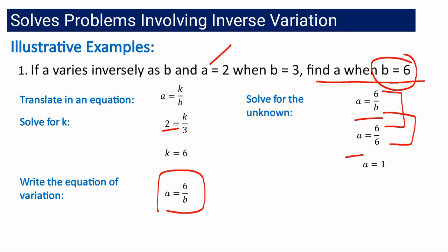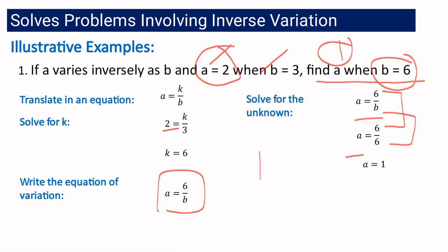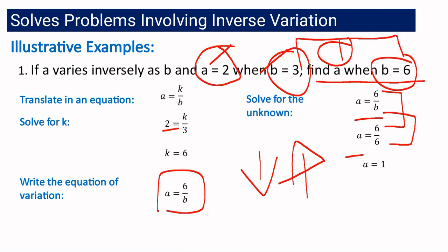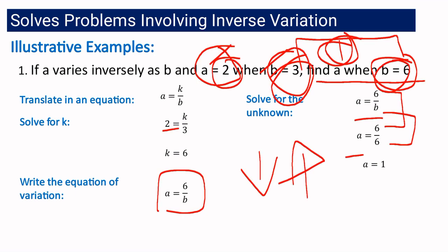So again, if a is 2, b is 3, and if a is 1, b is 6. You will notice that from 2, the value of a decreases to 1, while b increases from 3 to 6. And if we multiply 2 times 3, it gives us 6, and 1 times 6 is also 6 — confirming the constant product.